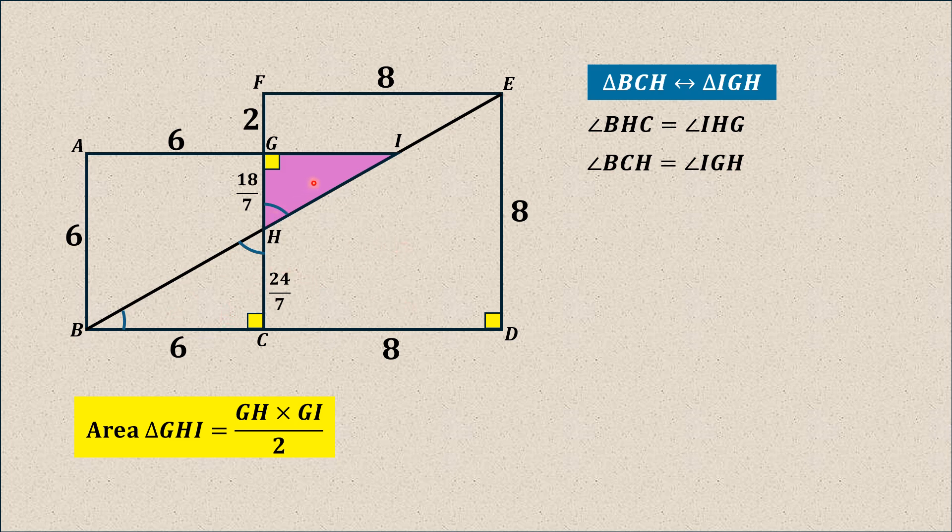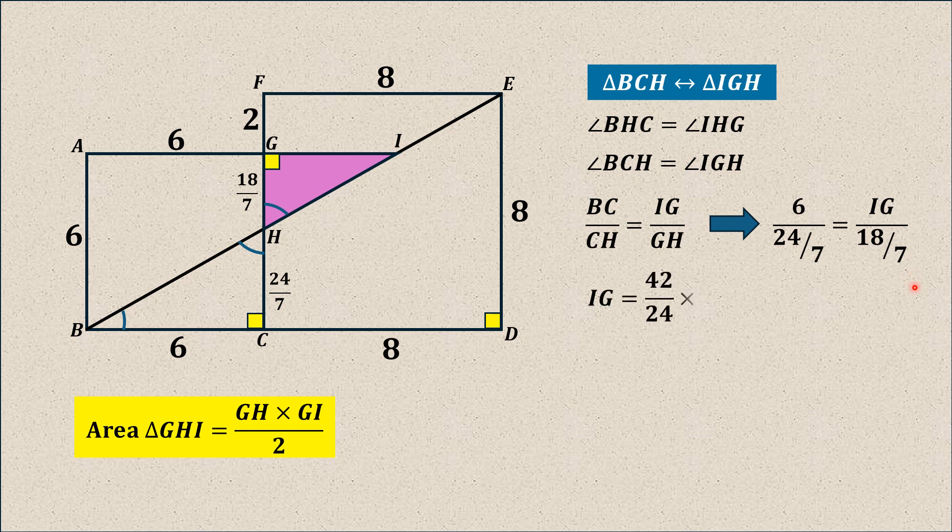And if triangles are similar, then ratio of their sides is equal. So, from these two triangles, we have BC over CH is equal to IG over GH. Substituting these values, we have to calculate IG. So, BC is 6, CH is 24 over 7, and GH is 18 over 7. Thus, from here, we have IG is equal to 9 over 2. So, we have found both values, GH and GI.